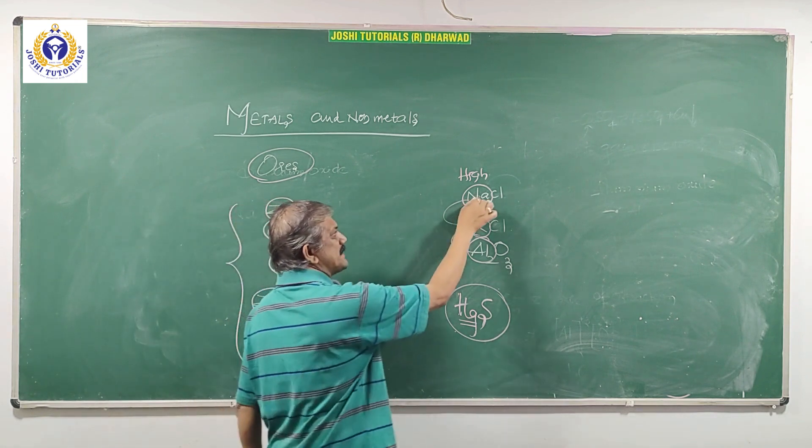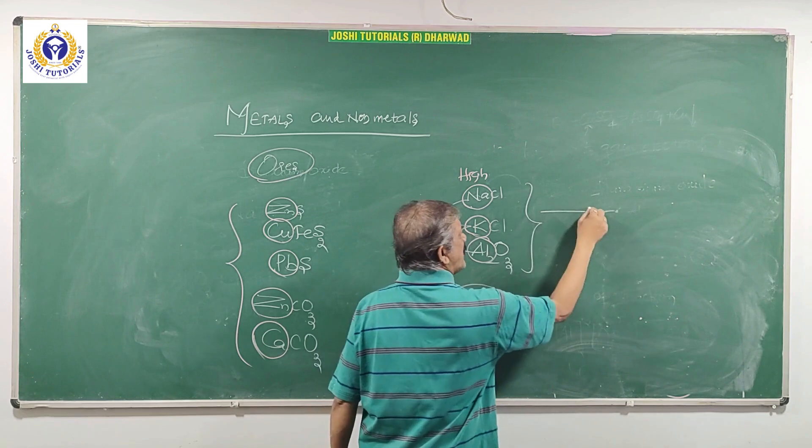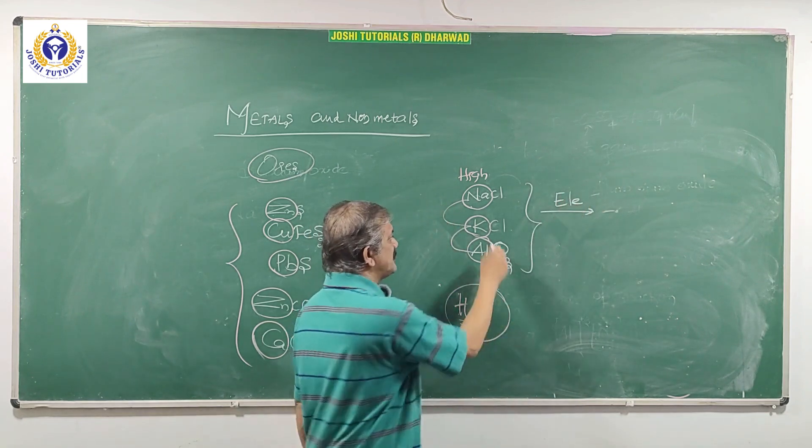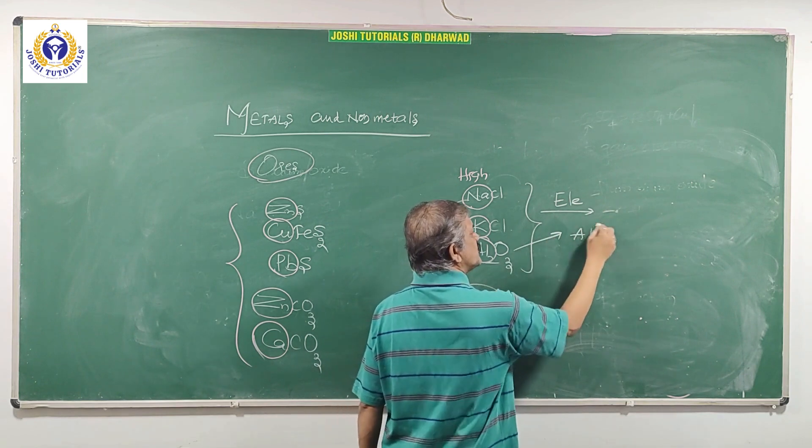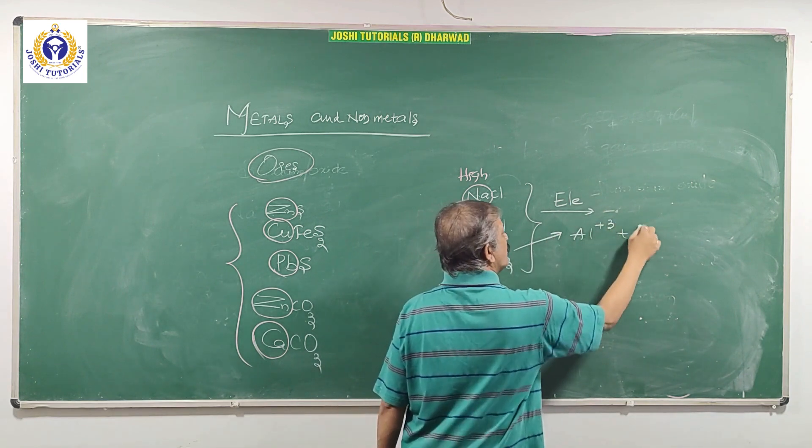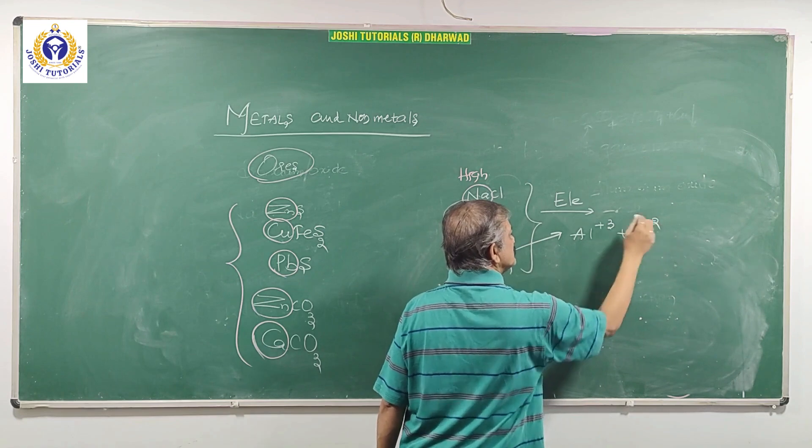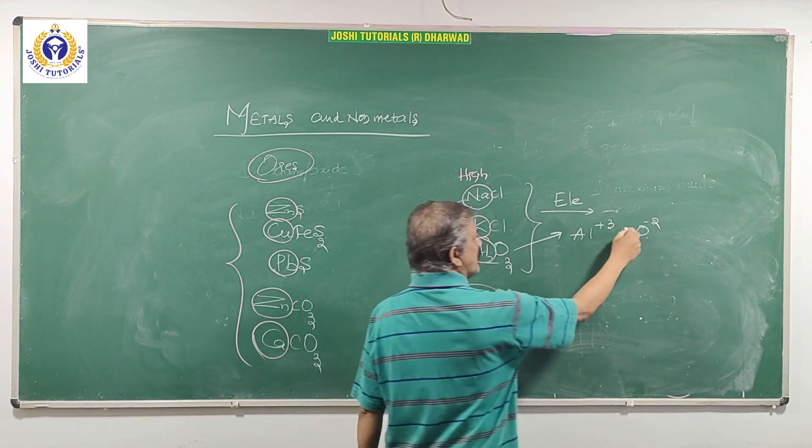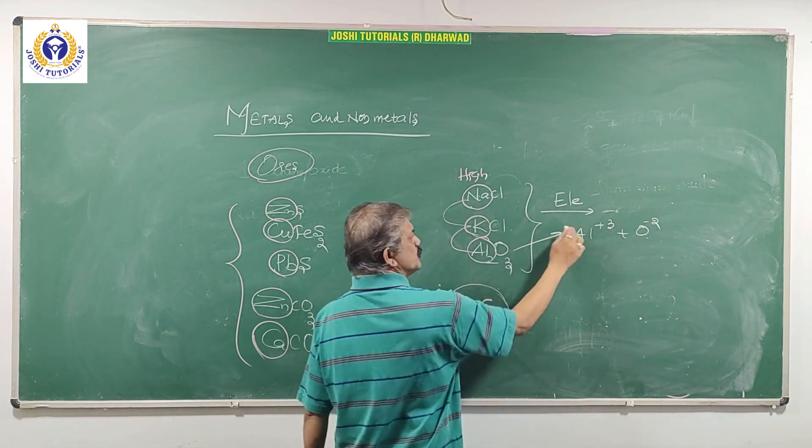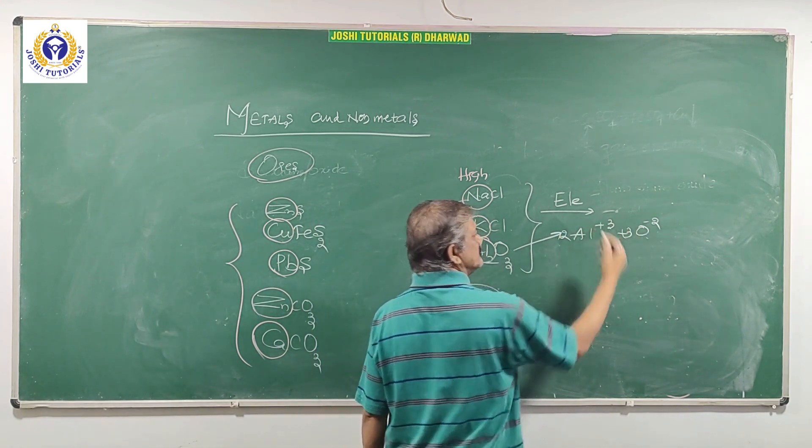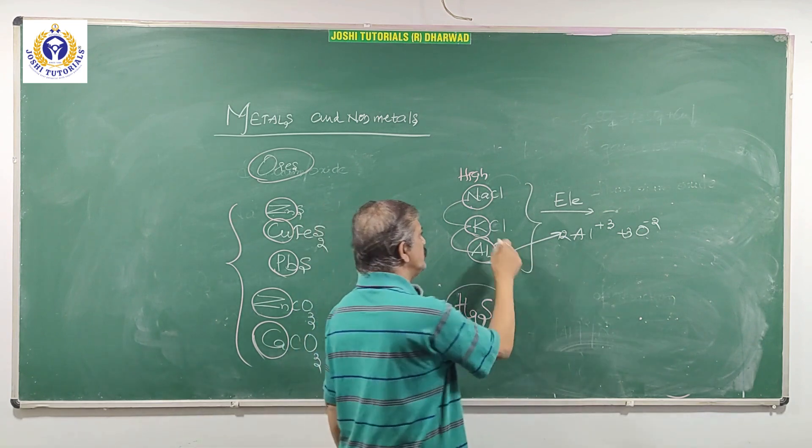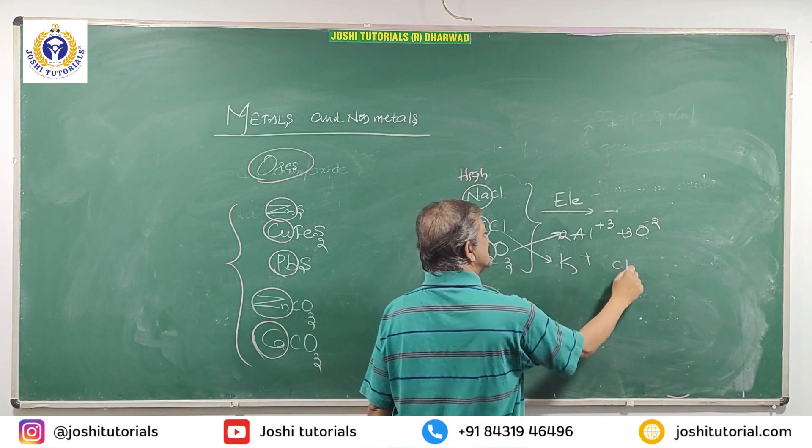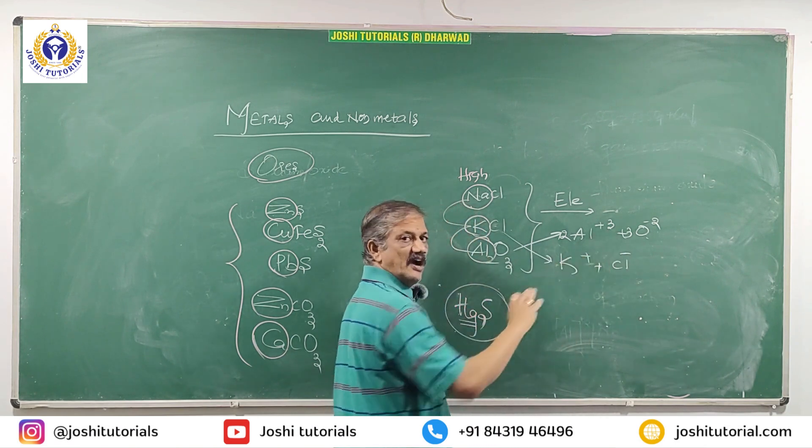If you want to extract these, the common agenda is pass electricity. So that they split. For example, this one, it splits into Al+3 and O-2. We have to balance it, 3 oxygen and 2 Al. KCl splits into K+ and Cl- ions.